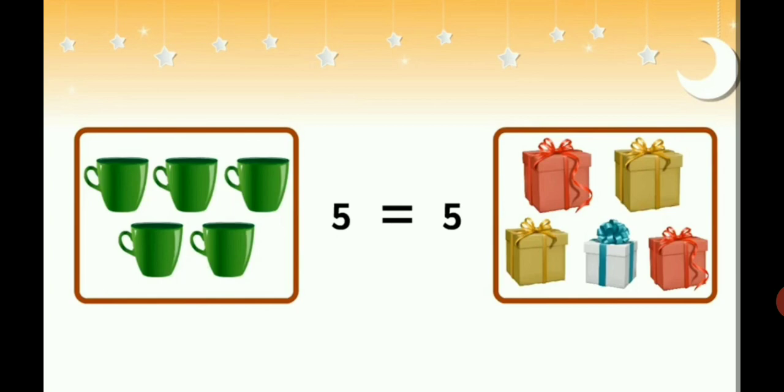Now count the number of boxes. 1, 2, 3, 4, 5. So number of cups is equal to number of boxes. So when two objects are equal, then we use this sign equal to. 5 is equal to 5.